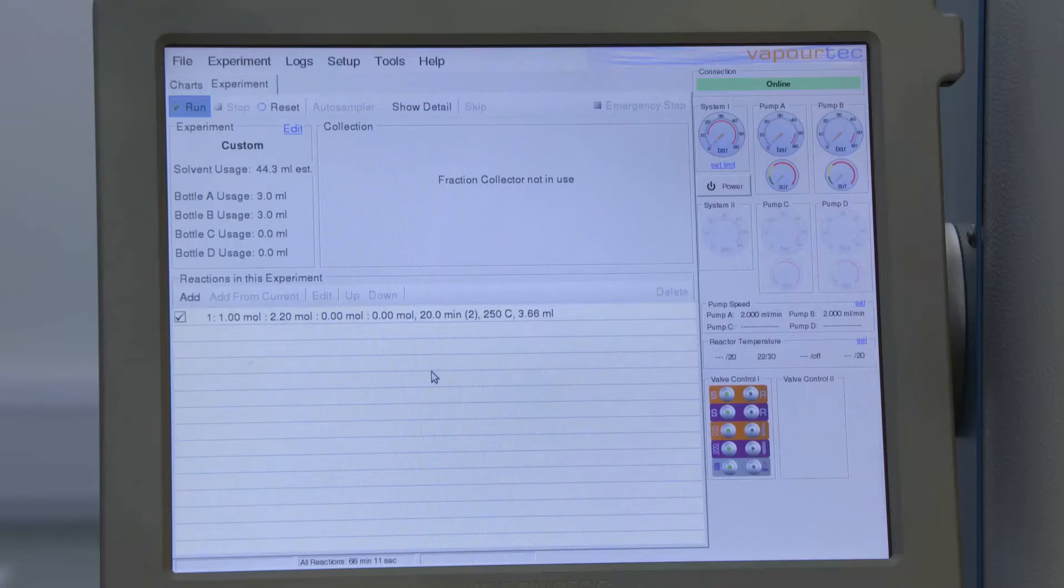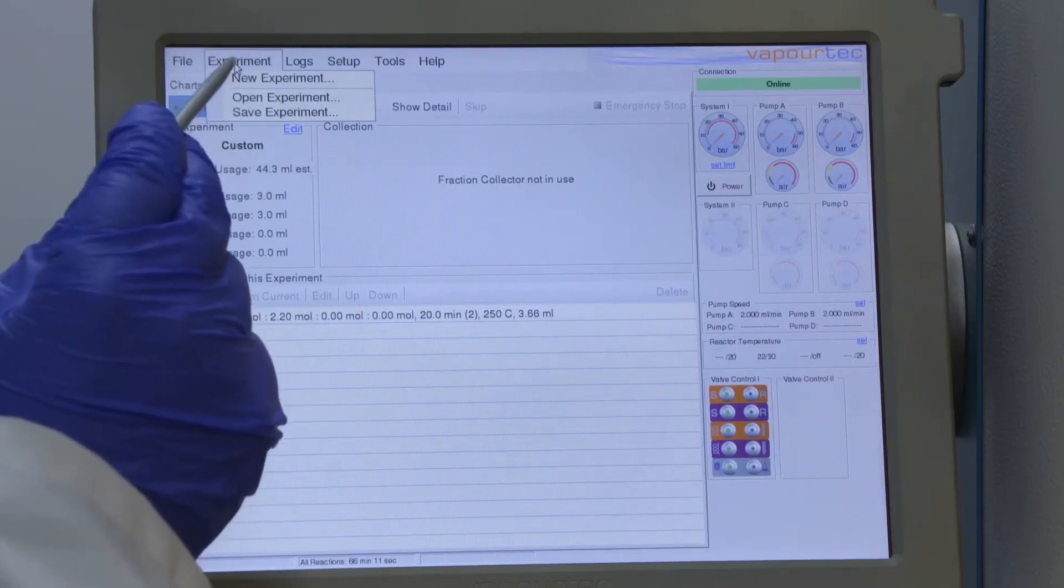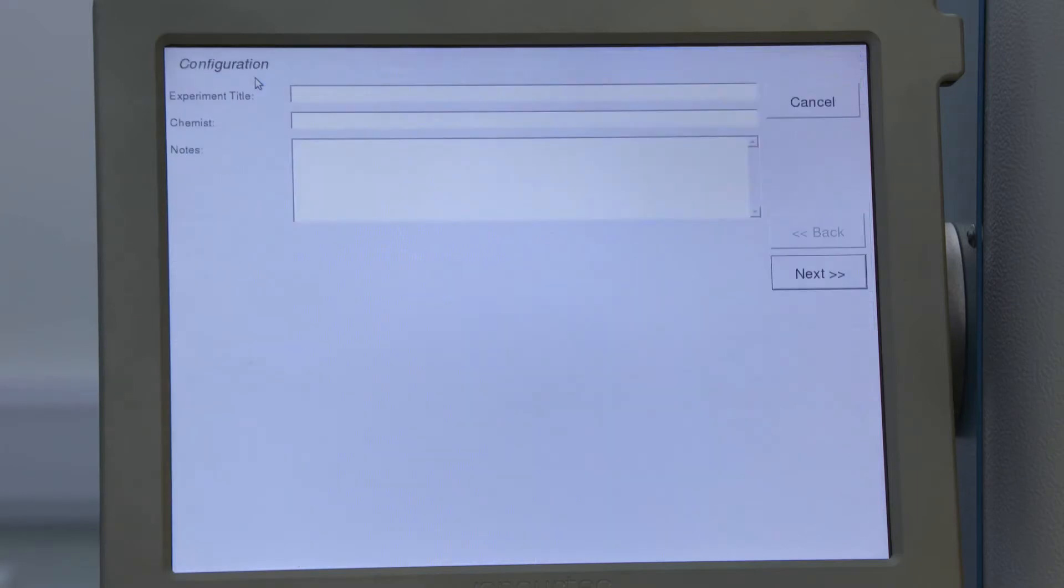Now that the system's ready I can program FlowCommander to run the experiment. To do that I open a new experiment. I have the opportunity to fill in some information about the experiment here.